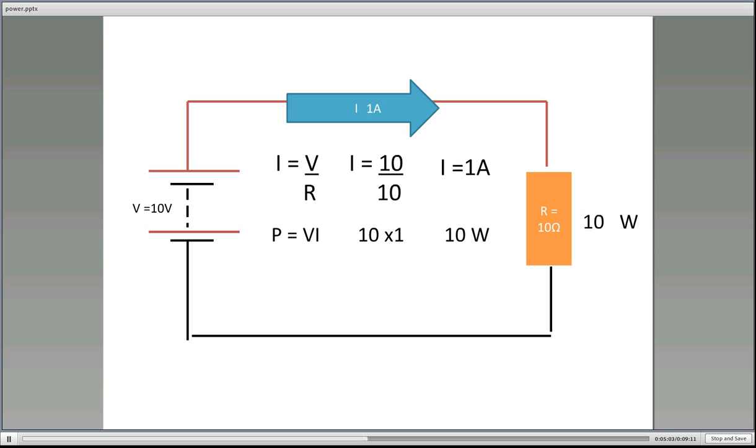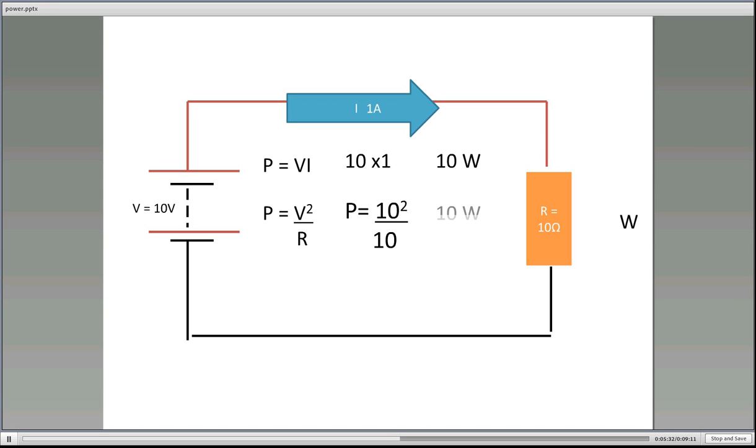So that resistor there, at 10 volts, is actually using 10 watts. And let's just make sure just to show you now how we can double check our answer by using another power equation. We've got P equals I squared R, which is 1 squared times 10, which gives us 10 watts. And finally V squared over R, we've got 10 squared, which is 100 over 10, which gives us 10 watts. So it doesn't really matter which equation we use, we'll get the same answer. But it's good to have an alternative just to check your answer.